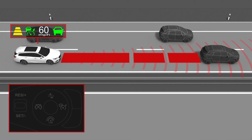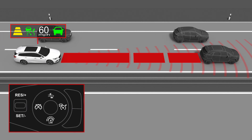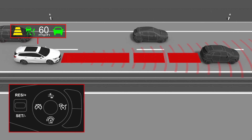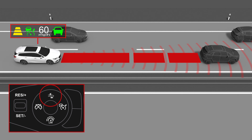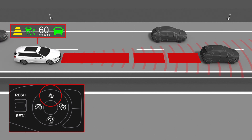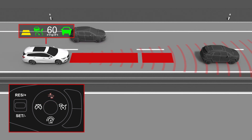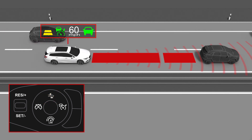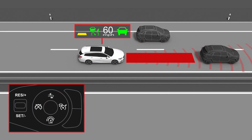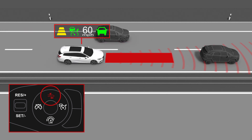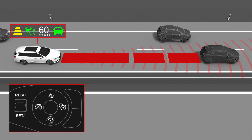The following distance to a preceding vehicle can be easily adjusted. Just press the distance setting button repeatedly to change between the far, medium, and near distance setting. You can always see the current setting in the driver information centre.